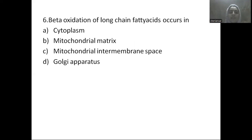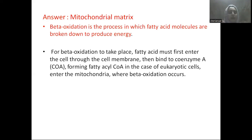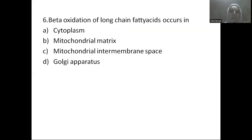The next question: beta oxidation of long-chain fatty acids occurs in — Option A: cytoplasm, Option B: mitochondrial matrix, Option C: mitochondrial inter-membrane space, Option D: Golgi apparatus. Beta oxidation breaks down long-chain fatty acid molecules to produce energy, and it takes place in the mitochondrial matrix.